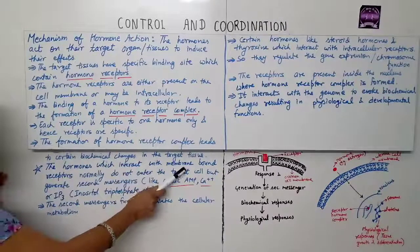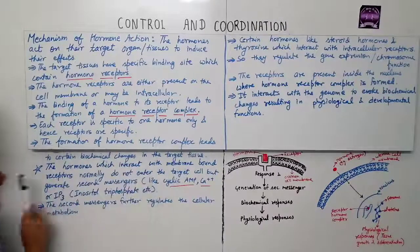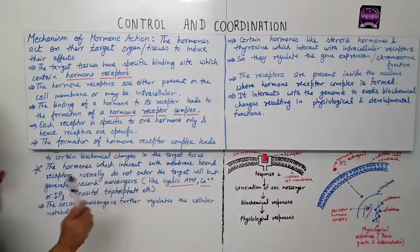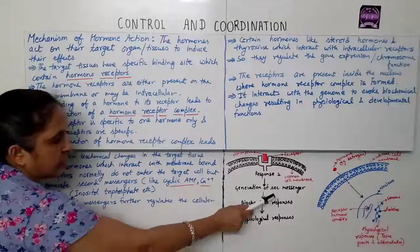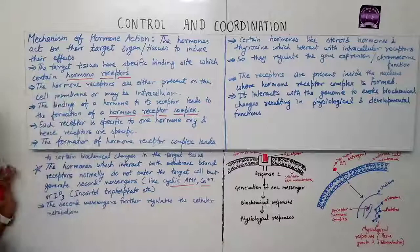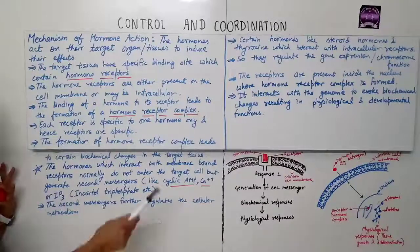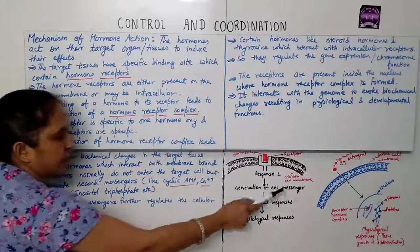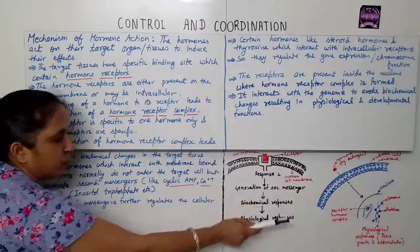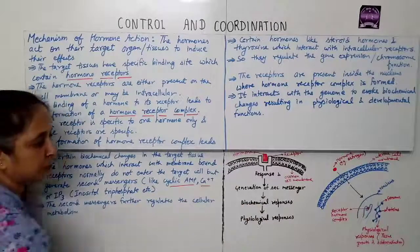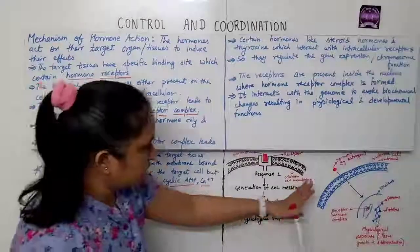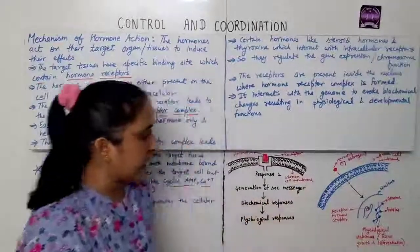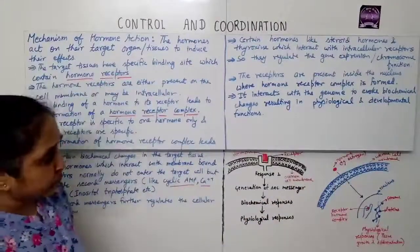The hormone which interacts with the membrane-bound receptor normally does not enter the target cell, but generates secondary messengers. These messengers further regulate biochemical responses and then physiological responses.